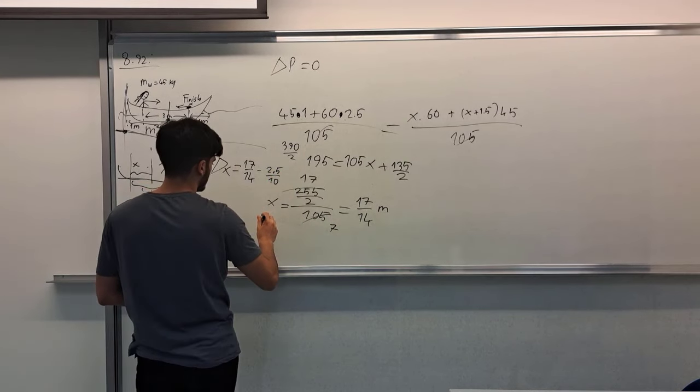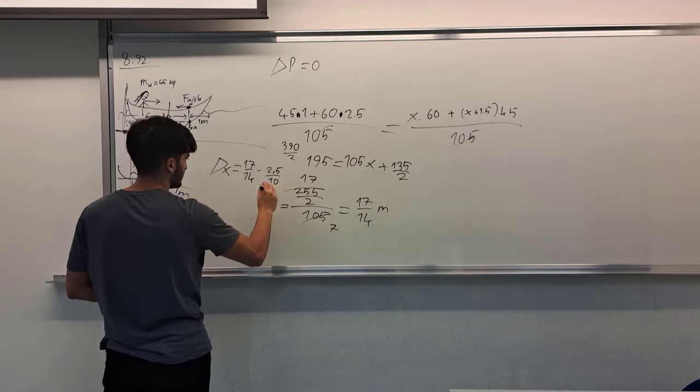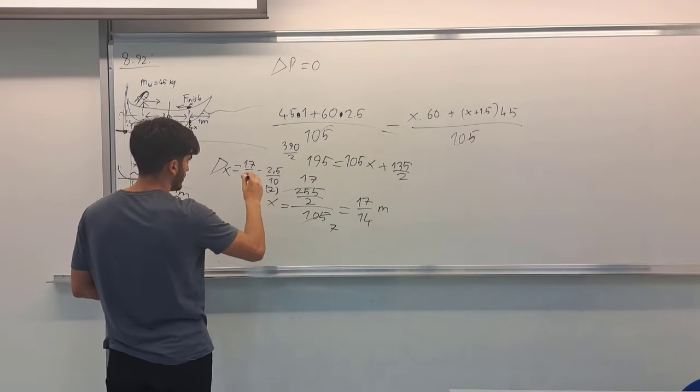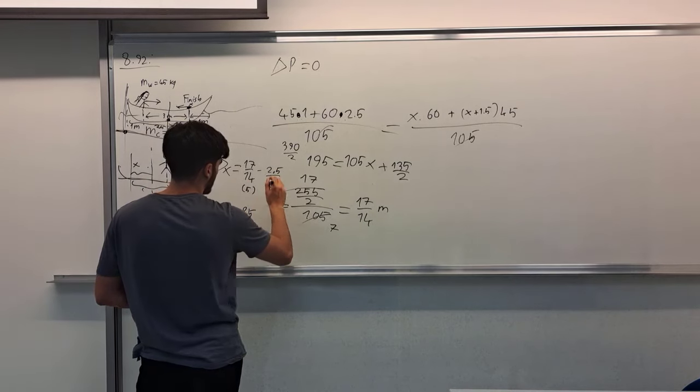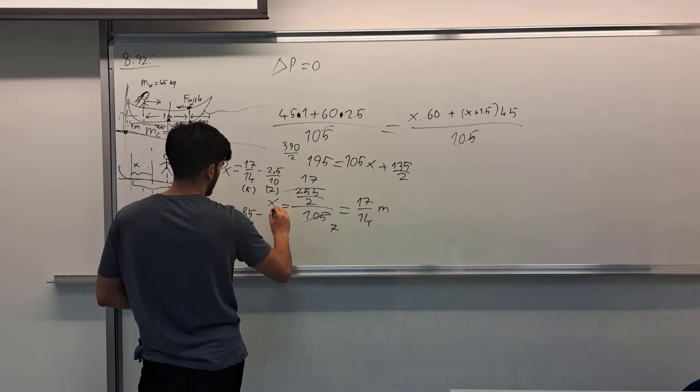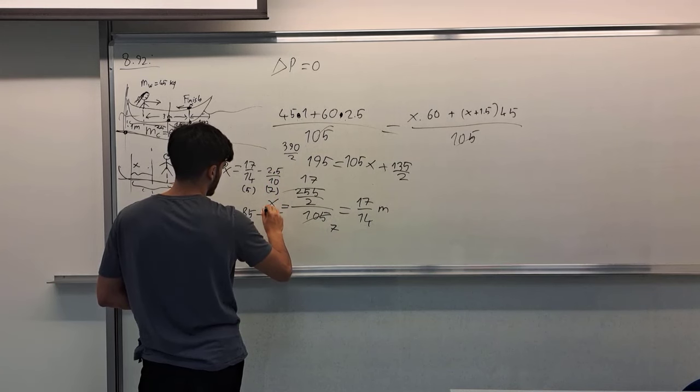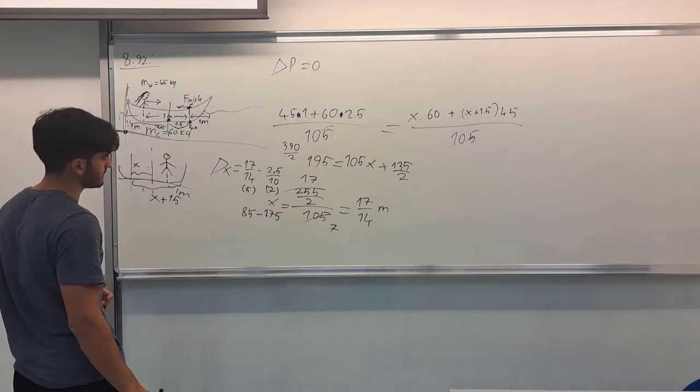So multiply this by 7, expand this by 7 and expand this by 5. So I obtain 85 and minus 175.